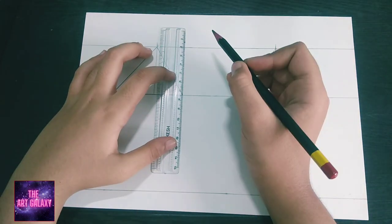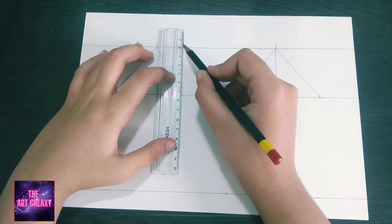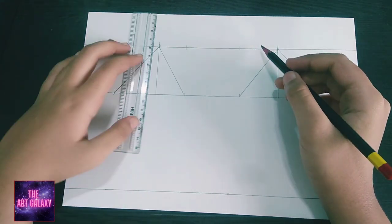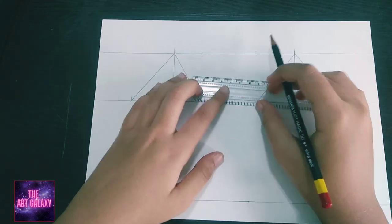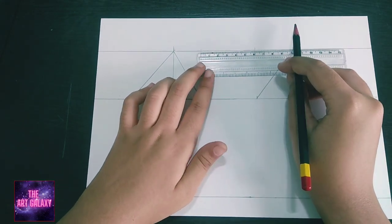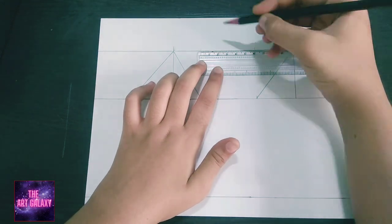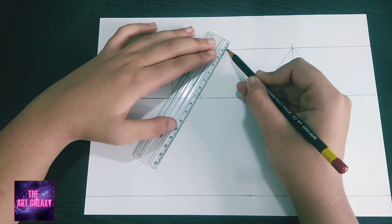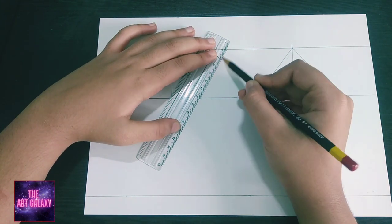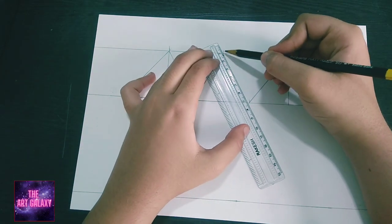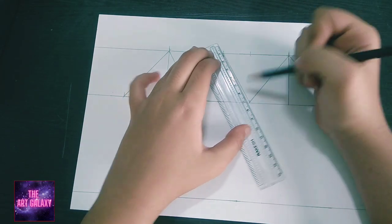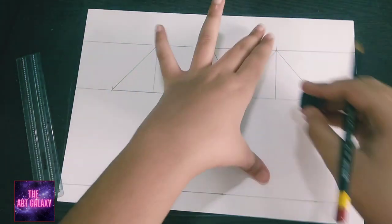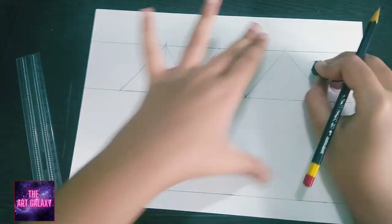Now we have to draw a point similar to the point which we have drawn in the second line. Repeat these steps on the other side as well. Now we have to draw a middle point for those points. Now connect these points. We can see that the top part of our diamond is ready. Just erase those middle lines.